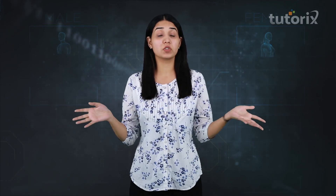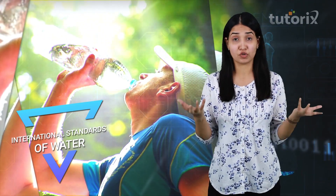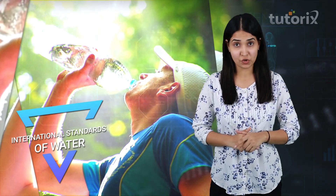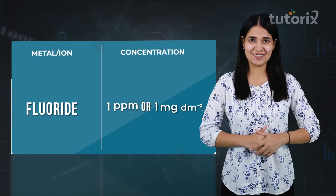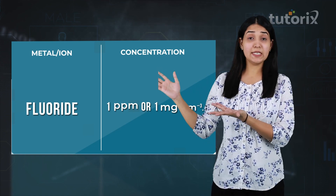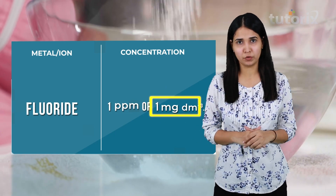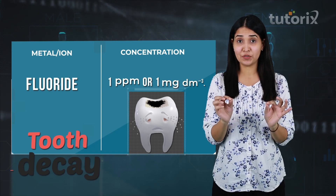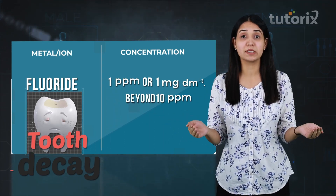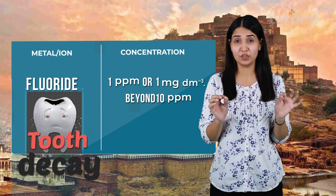We have discussed the different causes of pollution, the different agents, and how it is affecting living beings. Now, there is an internationally acclaimed standard for drinking water — certain ions are present in water and there is a specific concentration that the water should have for them. First, let's talk about the fluoride ion. Soluble fluoride is added to water to bring its concentration to about 1 ppm, or 1 milligram per decimetre cube. If there is no fluoride present in water, it can cause tooth decay. But if the concentration is beyond 10 ppm, it leads to decay of bones as well as teeth. A major effect is seen in areas of Rajasthan where the concentration is not suitable.